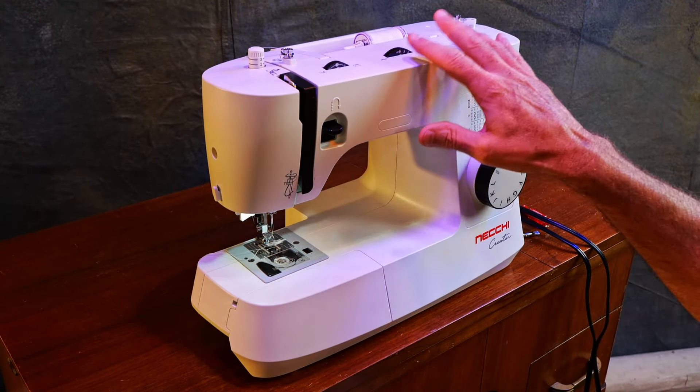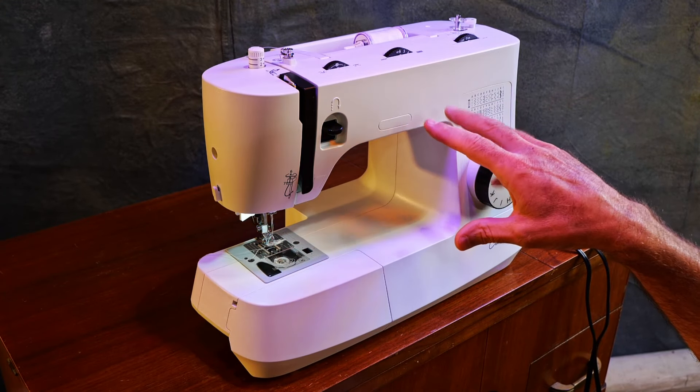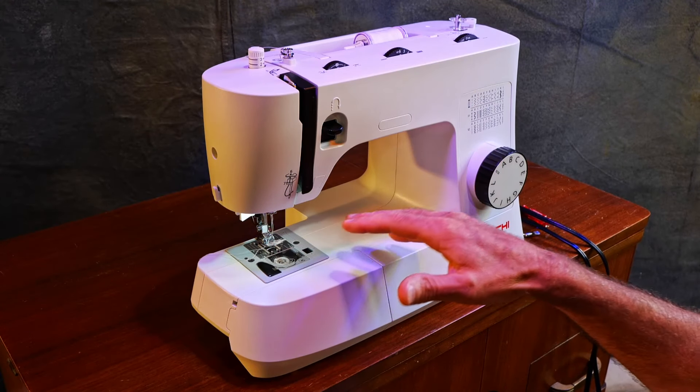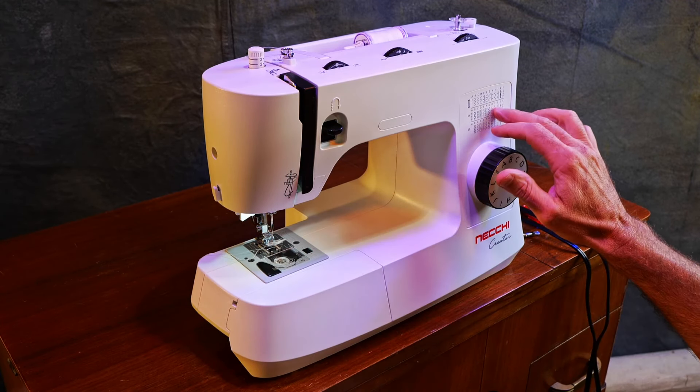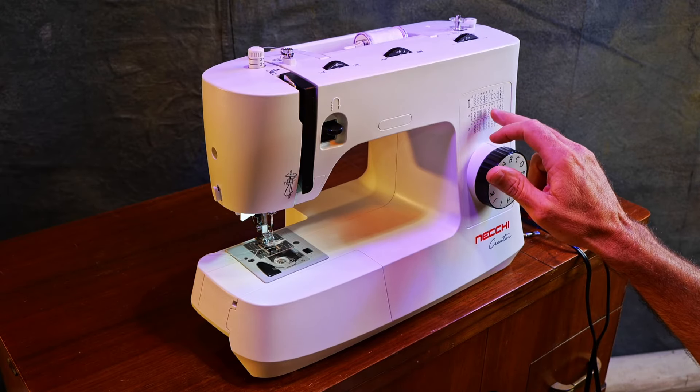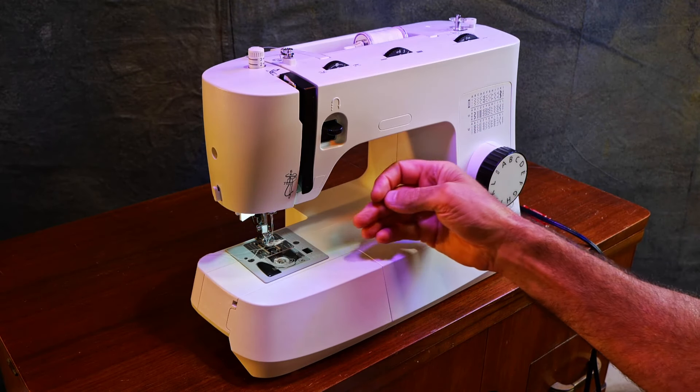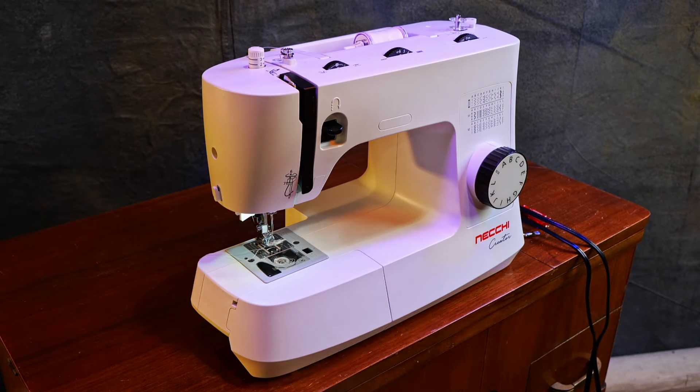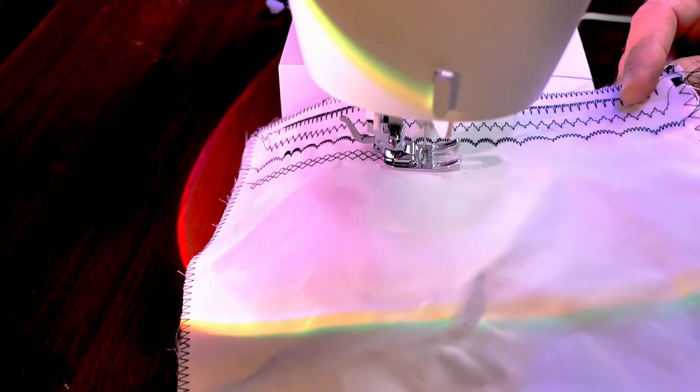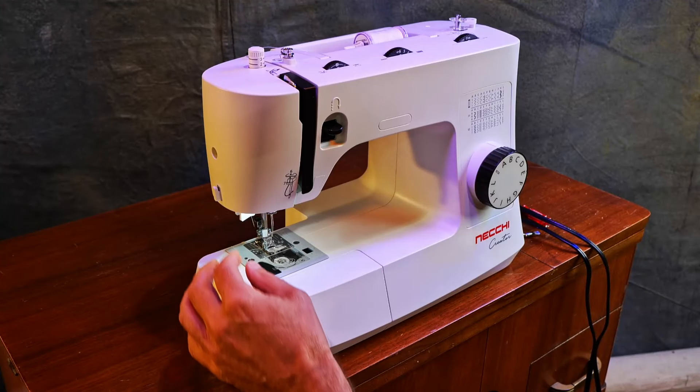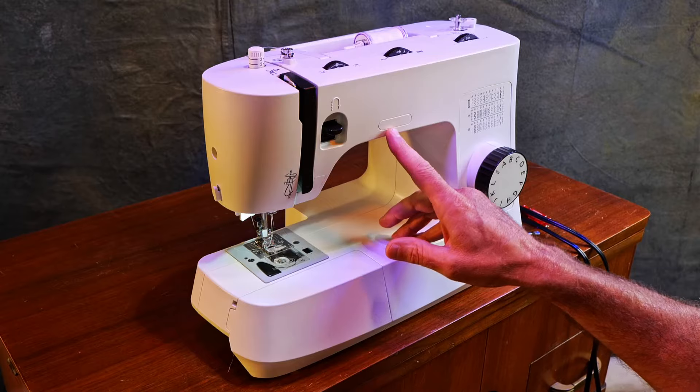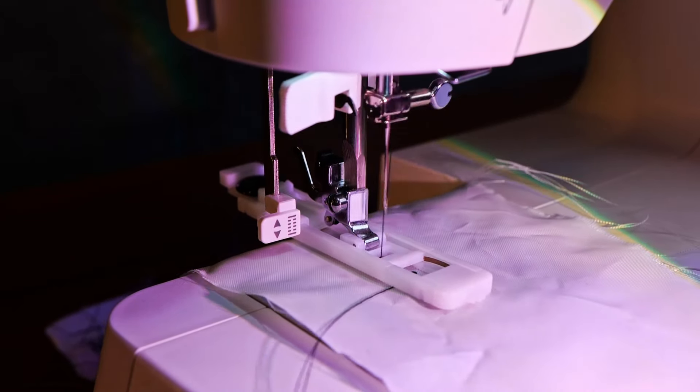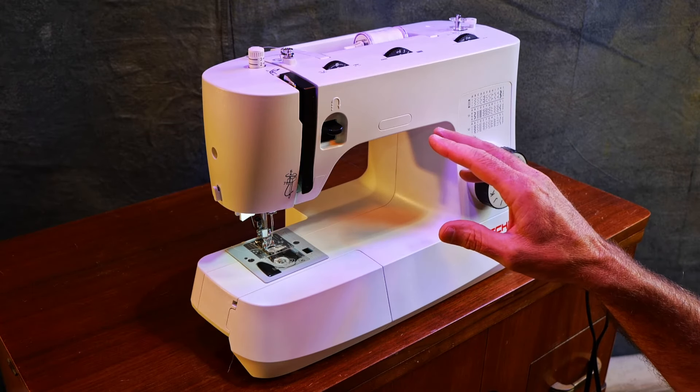I'll go into what all these dials and controls do and show you how to thread this machine, how to load a bobbin, how to use some of the different stitches. This machine will do straight stitch and zigzag and a lot of decorative stitches. This machine has some really nice decorative stitches in that the machine will actually use forward and reverse to get some of these patterns, and so that's pretty cool. This machine's got a needle threader. There's also a buttonhole system on this machine that's kind of neat. We'll look at all that stuff a little more closely and in depth.